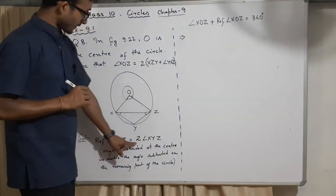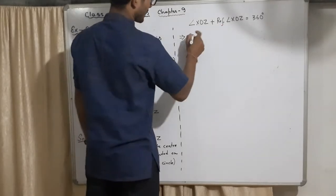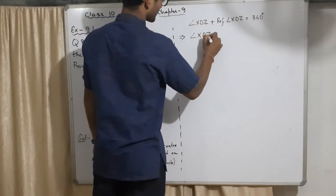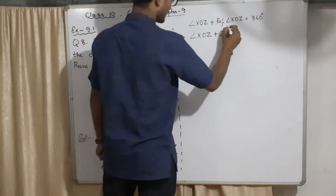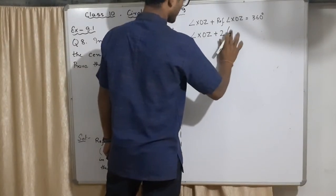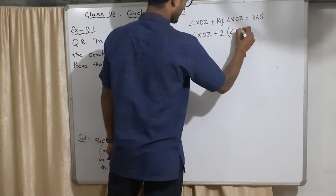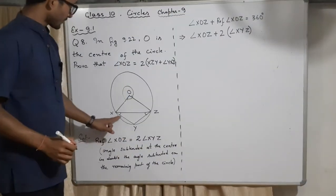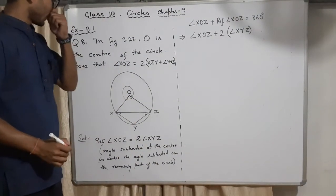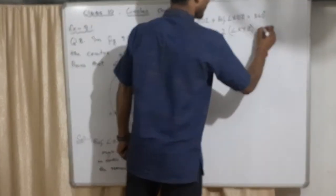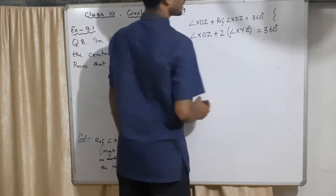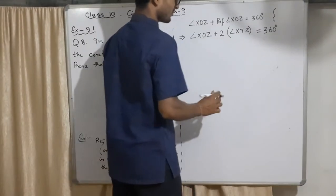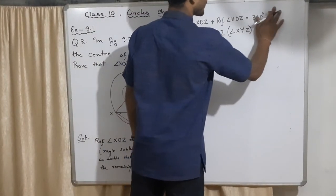XOZ is this angle, XOZ is this angle, and that reflex is this outer one. Both will become 360. Now from here, reflex angle is two times this. In place of this, I'll replace this one. ∠XOZ + 2 times ∠XYZ equal to 360 degrees.